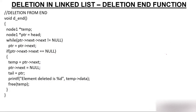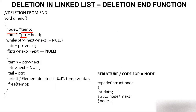In the code, we have created a pointer temp and a pointer PTR, both of type node1. We have a self-referential structure named node, having two member variables: one is data of integer type, and one is an address pointer of type struct node — because this pointer keeps the address of another node of the same structure type. We have created a variable node1 of this structure and then used typedef so that node1 represents the entire structure, making the code shorter.